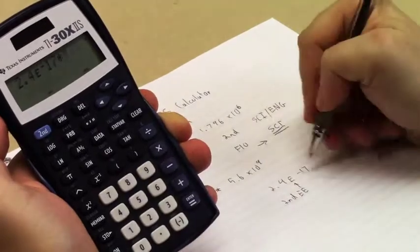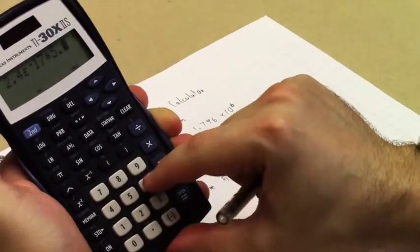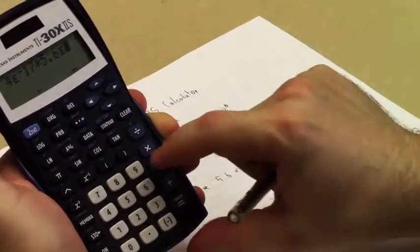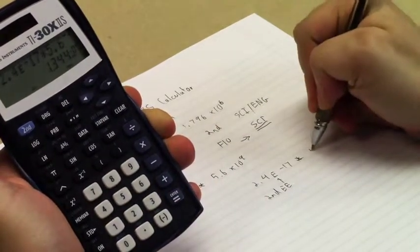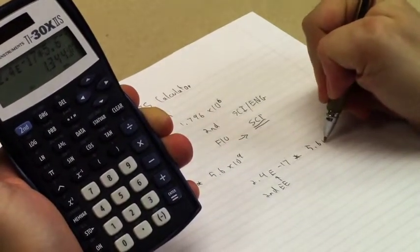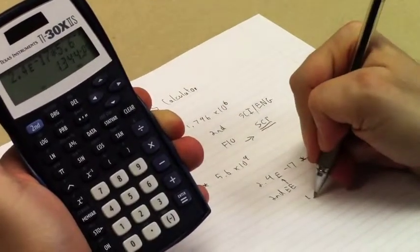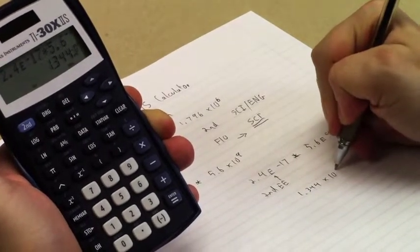Then we're going to hit times, and we want to do 5.6 second EE. In this case, it was 10 to the 9th, so I'm going to type in 9 and hit enter. And that gives us our answer, which is 1.34 times 10 to the negative 7th.